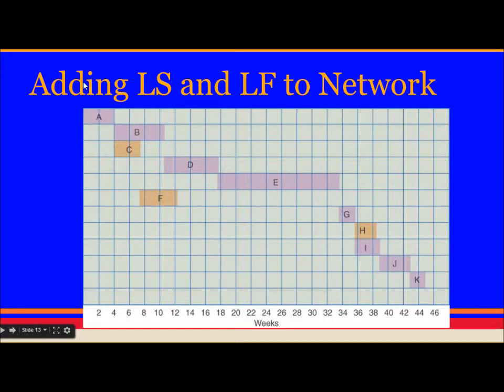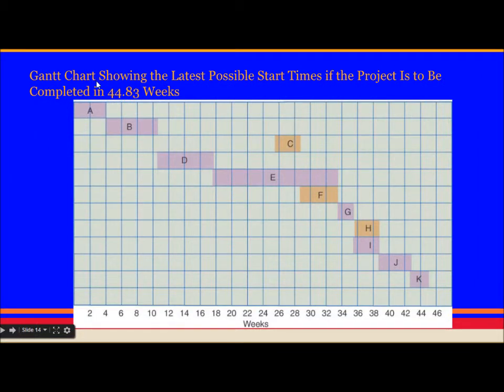And this Gantt chart is drawn using late start and late finish to the network. This also completes at 44.83. Gantt chart showing the latest possible start times if the project is to be completed in 44.83 weeks. Every activity is at the latest possible start time.